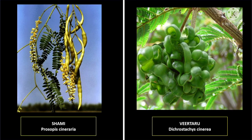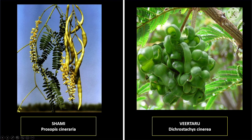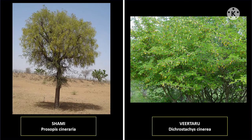The next feature is the seed pod. The pods of shami — which Rajasthanis call 'sangri' and Haryanvis call 'jeanj' or 'jhaanj' — are elongated, tubular, and cylindrical. In contrast, seed pods of veertharu are highly curled and flattened. You can also see the thorns on veertharu are very large, whereas shami tree thorns are conical and small.